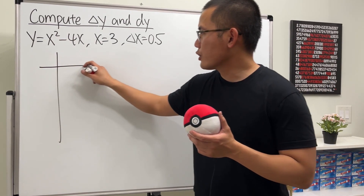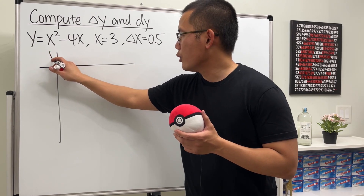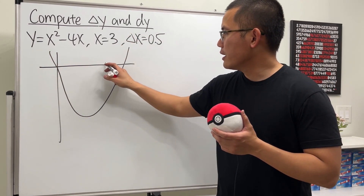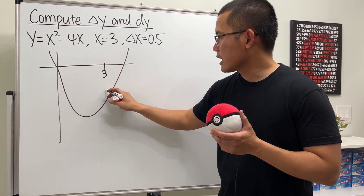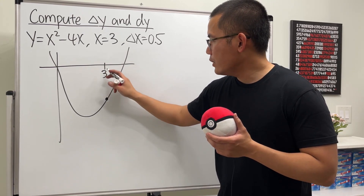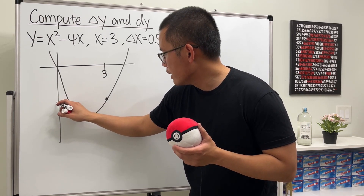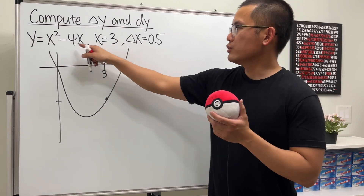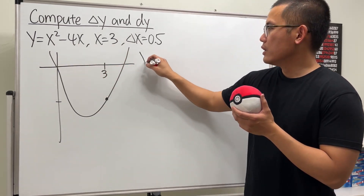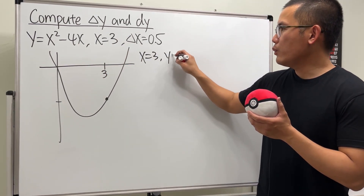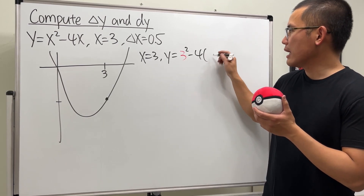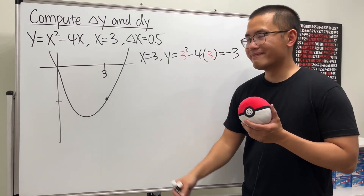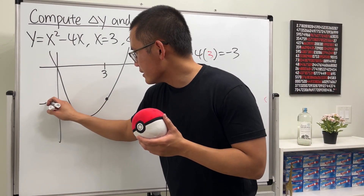This graph is just going to be a parabola that opens up. We care about when x is at 3, so let's say 3 is right here. We come back down to find the y value. Plugging 3 into the equation: when x is 3, y = 3² - 4(3) = 9 - 12 = -3. So this point is at y = -3.